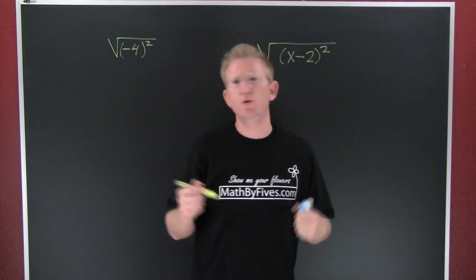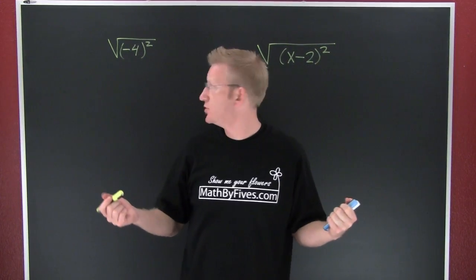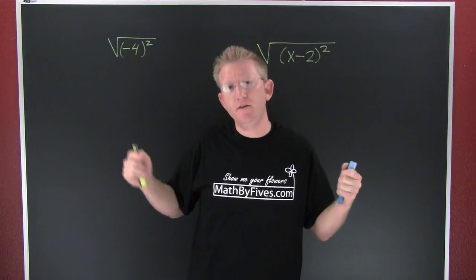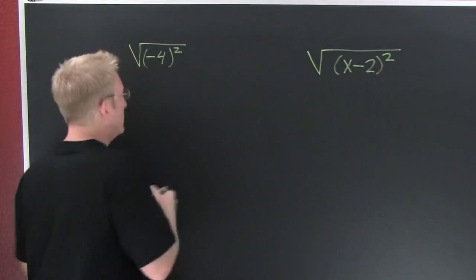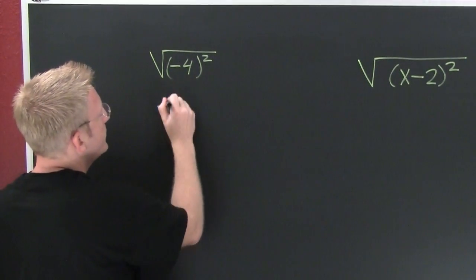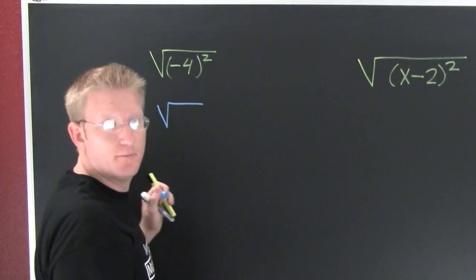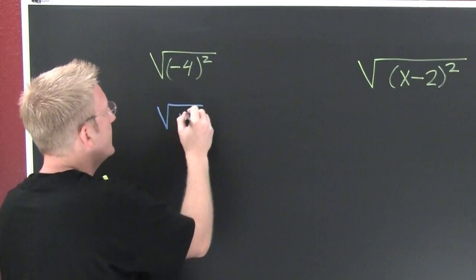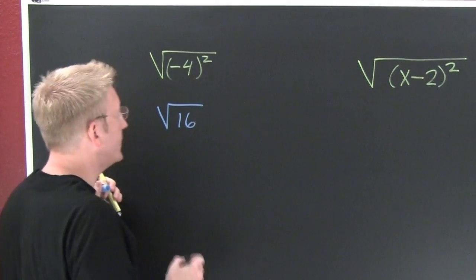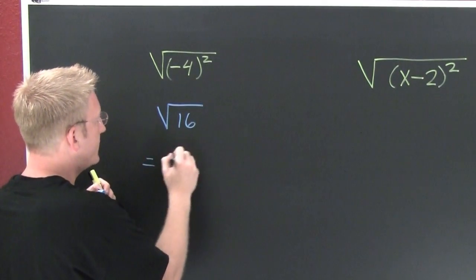Let's take a look at this. Let's just go on a straight evaluation trip. If I was to look at this, I have the square root of what is minus 4 squared? It's 16. And then that turns out to be 4.